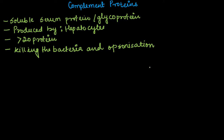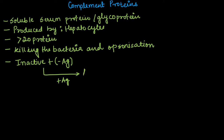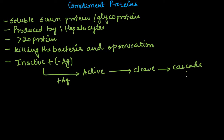These two actions — killing bacteria and opsonization — are very famous regarding complement protein. Initially, these proteins when they circulate in the body are mainly in an inactive form — in the absence of antigen, they are mainly inactive. But whenever there is a presence of antigen, they behave as active molecules. Not only this, after activating itself, it can cleave other complement proteins, and hence there is a cascade of complement protein activation, producing an immune response in the body attacked by antigen. This inactive form can be named as zymogen, or sometimes we call it a proenzyme.